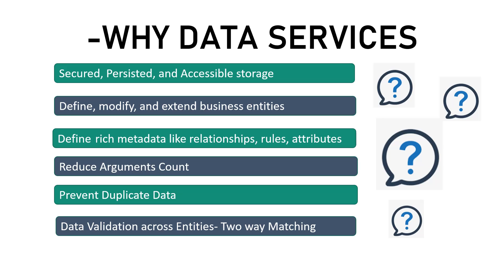The next use case is data validation across entities, often called two-way matching. For example, we have data related to customers and invoices. Whenever we create an invoice it should be tagged to a customer — we should not have any invoice not tagged to a customer entity. Any invoice stored in the data services should have a valid customer. With data services this is easily accomplished through the relationship between entities.